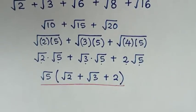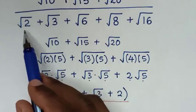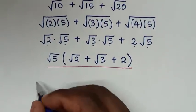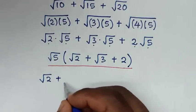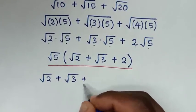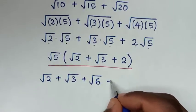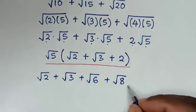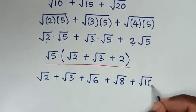In the next step, we simplify the denominator, which is square root of 2 plus square root of 3 plus square root of 6 plus square root of 8 plus square root of 16.